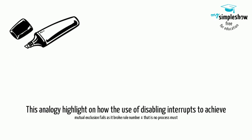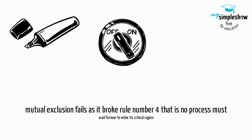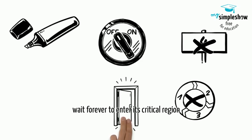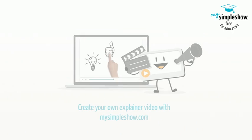This analogy highlights how the use of disabling interrupts to achieve mutual exclusion fails as it broke rule number 4, that is no process must wait forever to enter its critical region.